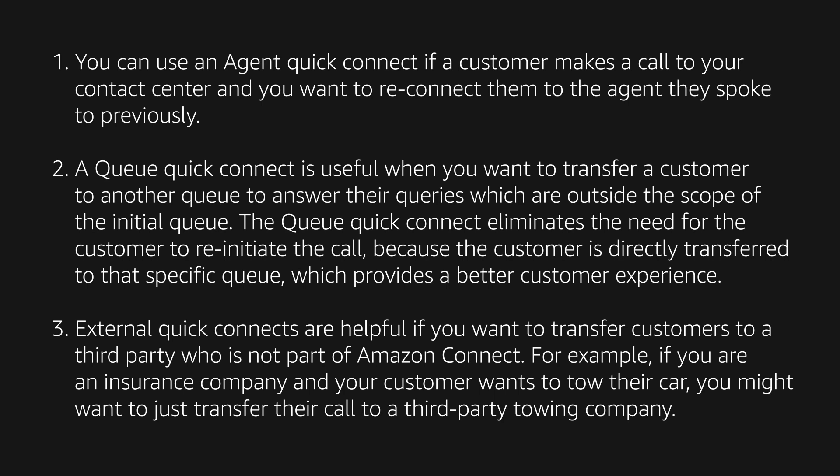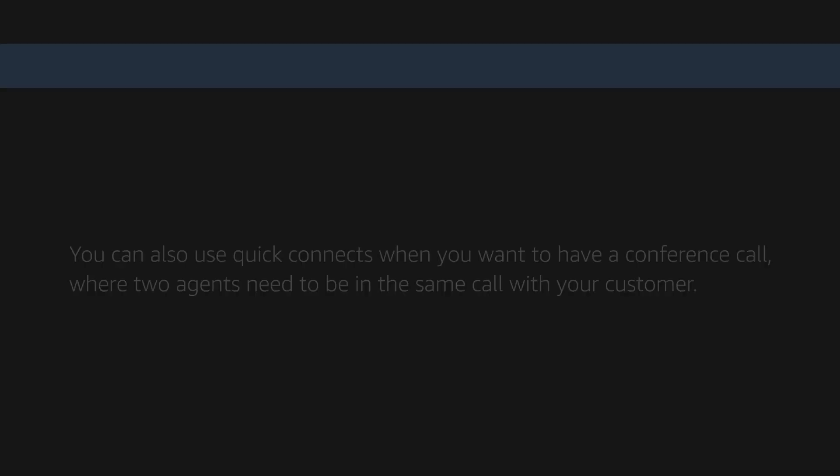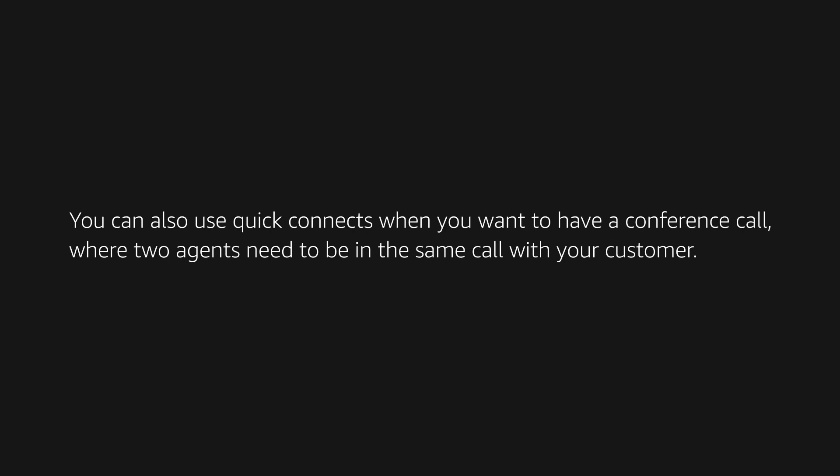External quick connects are helpful if you want to transfer customers to a third party who is not a part of Amazon Connect. For example, if you are an insurance company and your customer wants to tow their car, you might want to transfer their call to the third party towing company. You can also use quick connects when you want to have a conference call where two agents need to be on the same call with your customer.